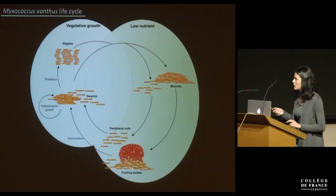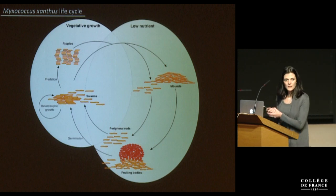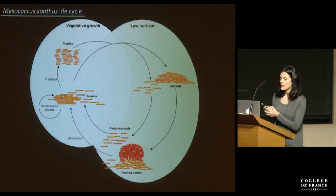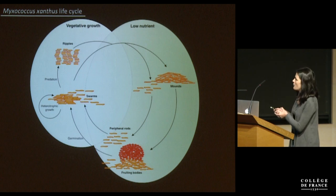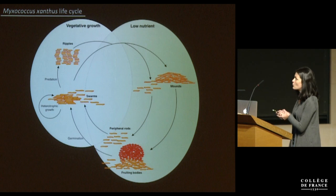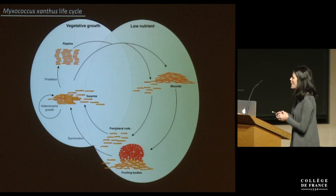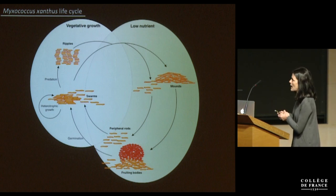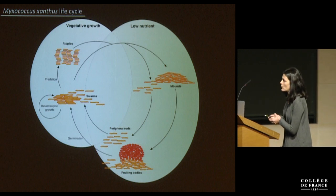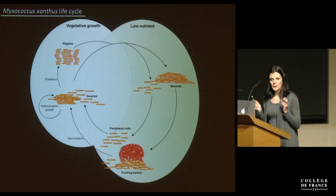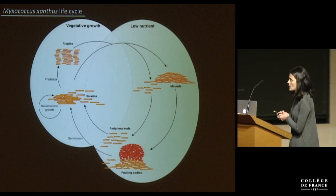Let me first very briefly introduce our bacterial model system. It is Myxococcus xanthus, a gram-negative soil bacterium with a complex life cycle. Bacteria can grow vegetatively on macromolecules or on other bacterial species in some predatory behaviors. But when nutrients become low in the environment, bacteria start aggregating into mounds, then later develop into fruiting bodies containing spores. Spores can germinate when conditions become favorable again to start a new life cycle.